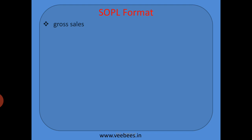The statement will start with gross sales — total sales is shown. Then after that, we will deduct the sales returns. The balance will then be shown as net sales, as we already know.